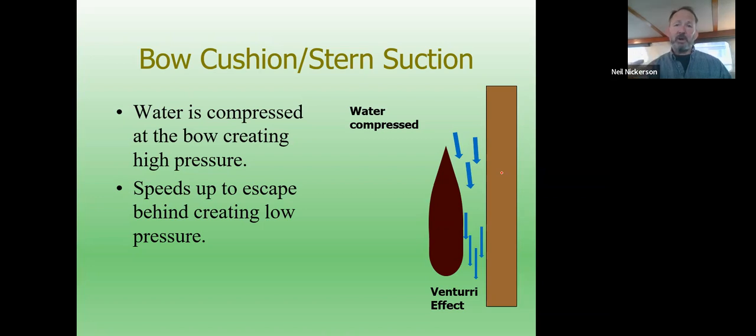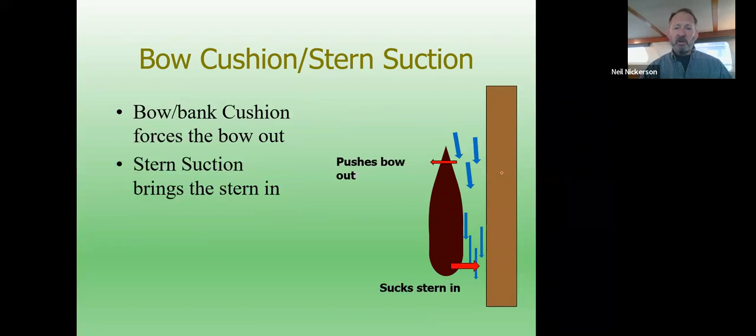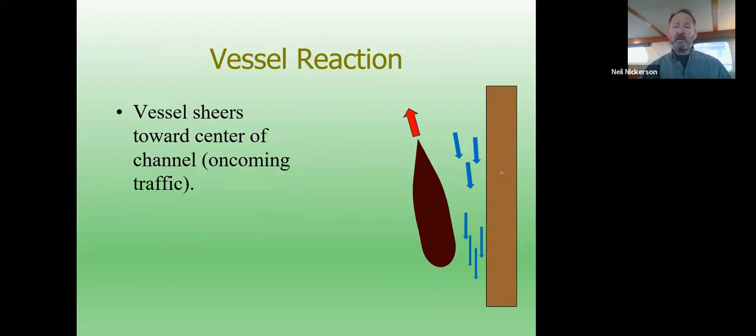So we have high pressure at the bow, pushing our bow away, low pressure at the stern, sucking our stern in towards the bank, and the end result is pushing our bow out, sucking our stern in, and we tend to be pushed out into the center of the channel.